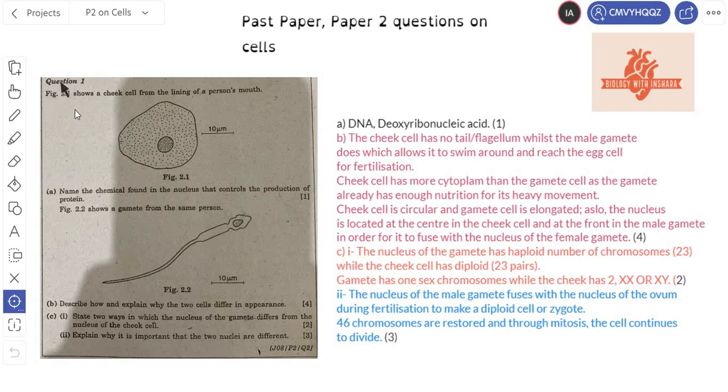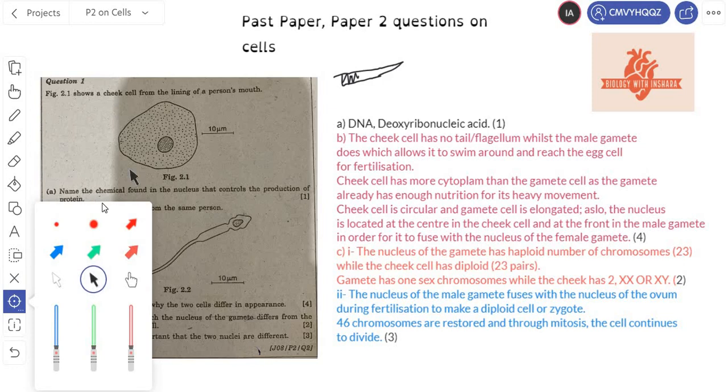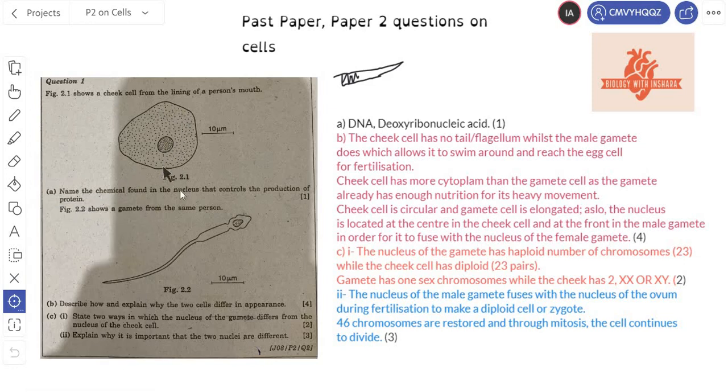This is the past paper question taken from the past paper. We are doing topicals. So that's the first question, question number 1. Figure 2.1 shows a cheek cell from the lining of a person's mouth. This is basically the type of cell you would expect to find inside your mouth. There are experiments done for this type of cell. You just kind of take this long wooden piece, it's basically a bit sharp, then you basically rub that inside your mouth and then you put it on your microscopic slide and then you place a cover slip and you view it and you should basically find something like this.